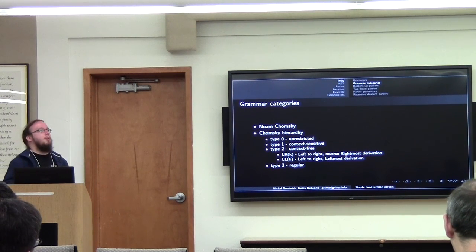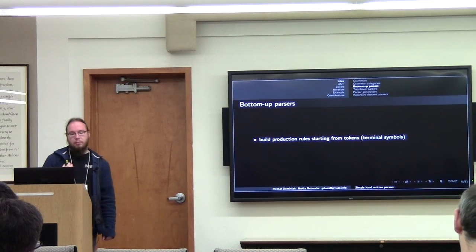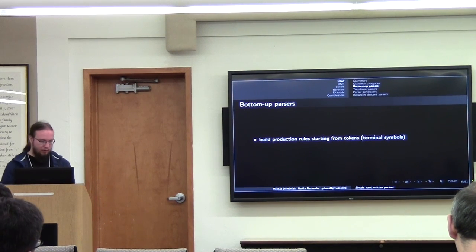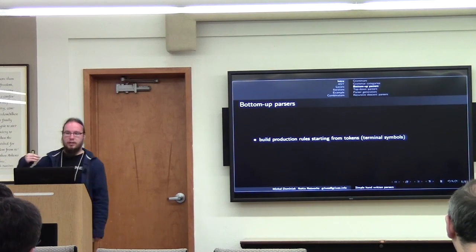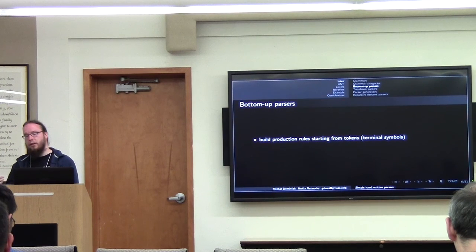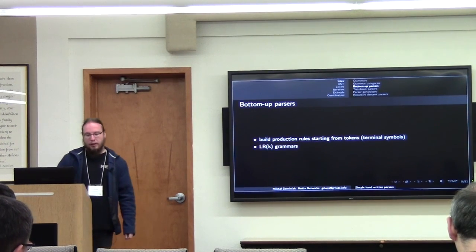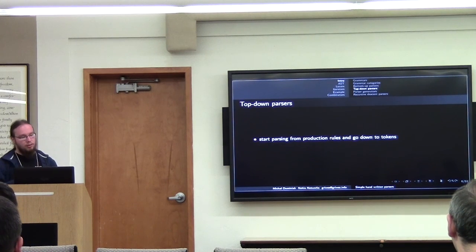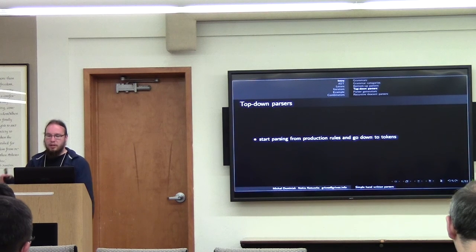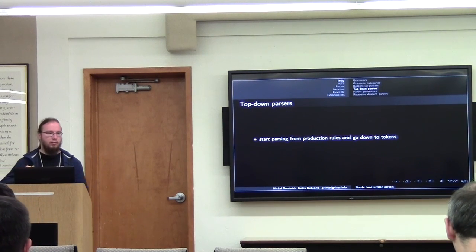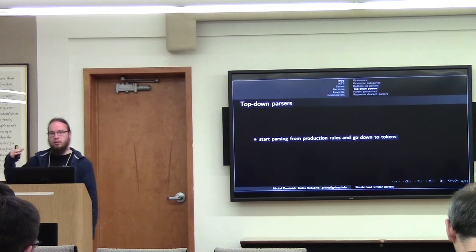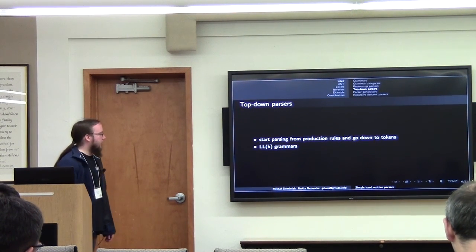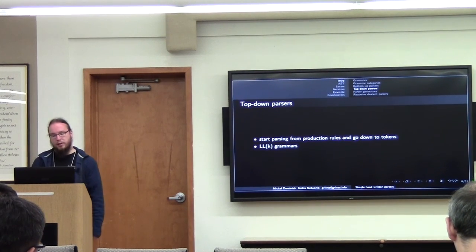There are different strategies for parsing. There are bottom-up parsers, which start from tokens, and depending on the token they see, go further and look at other tokens, then determine which production rule we are encountering. LR grammars are one example of those. And there are also top-down parsers, which start from actual production rules and try to match them — logically going from the top level of the grammar specification to the very bottom of terminals. That's all LL grammars, and these are the ones that are nice to write by hand.